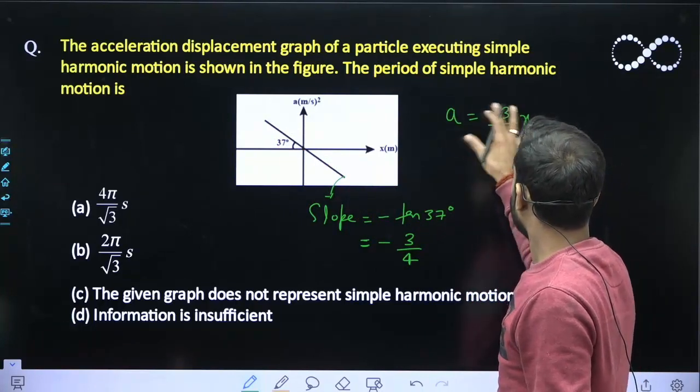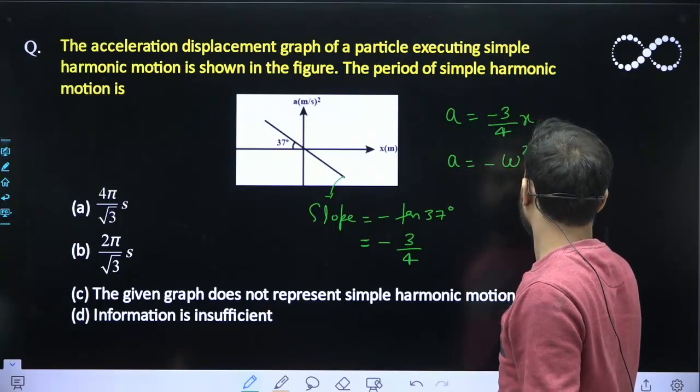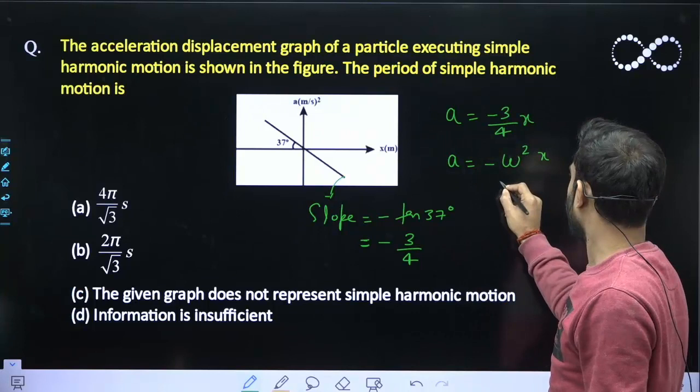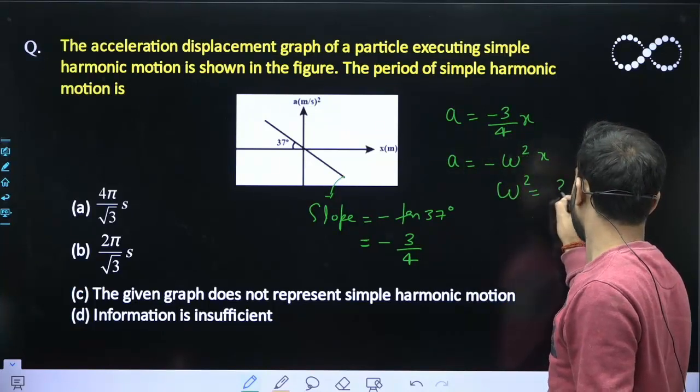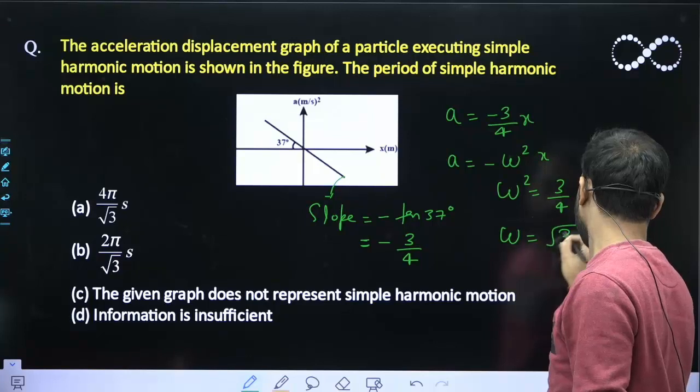Now, in terms of SHM, I can write acceleration is equal to minus omega square x. So, if I compare these two equations, I can say omega square is equal to 3 by 4. So, omega is equal to root 3 by 2.